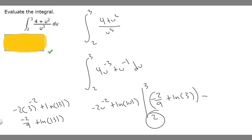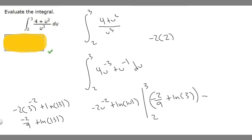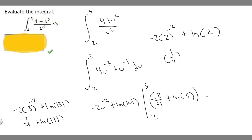Now we plug in the lower bound of 2: minus 2 times 2 to the minus 2 plus ln|2|. The absolute value of 2 is just 2. Since 2 to the minus 2 is 1 over 4, and we multiply by minus 2, we get minus 2 over 4, which equals minus 1 half. So we have minus 1 half plus ln(2).